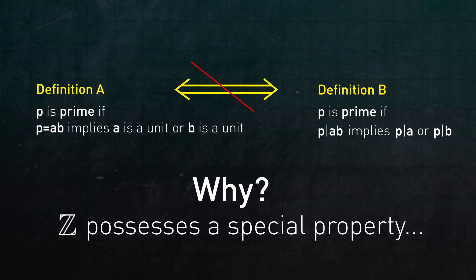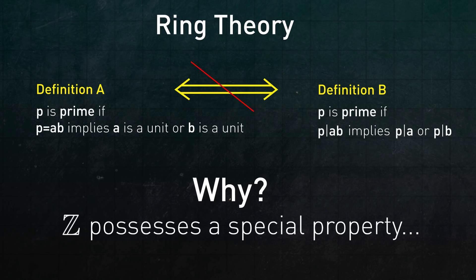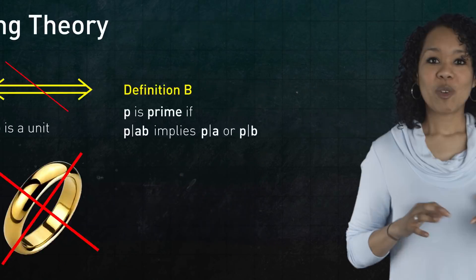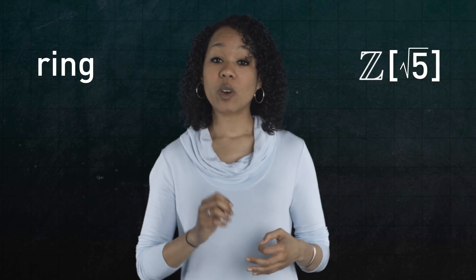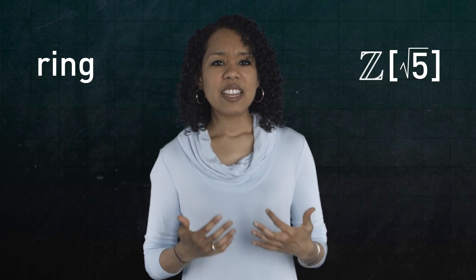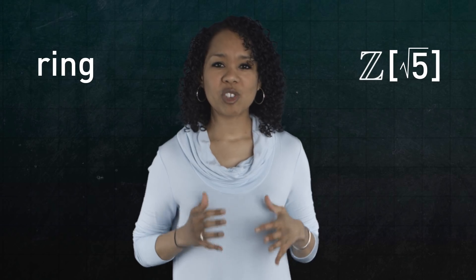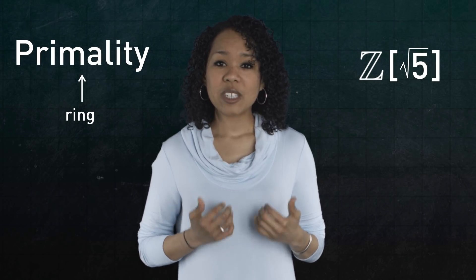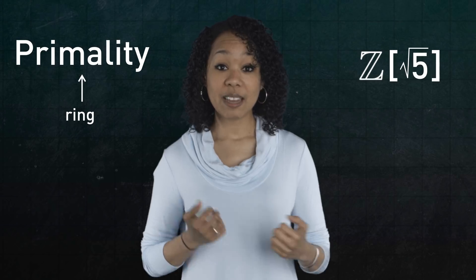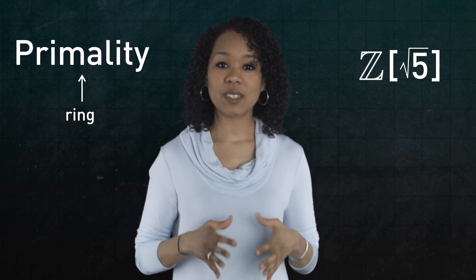Before I tell you what that property is, let me just say that this overall discussion is a part of something called ring theory, the study of rings, but not this kind of ring. A ring is a mathematical object, a set of elements that behave a lot like integers, even though they may not be integers. And Z adjoined root 5 is one such example. The neat thing is that once you have a ring, you have enough mathematical structure to talk about primality. In particular, our two definitions, a and b, have technical names in ring theory.